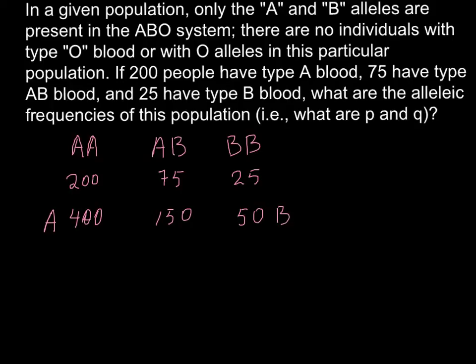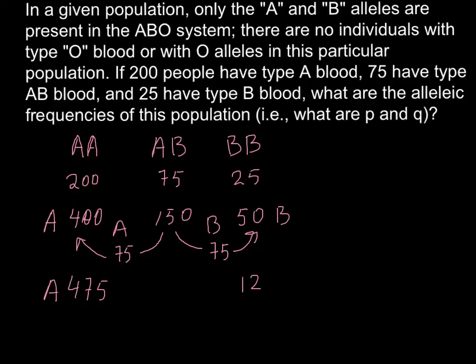Now we have to divide this group in the middle and as you see, this group have 150 alleles, half of them would be A alleles, half of them would be B alleles, so we have to transfer 75 alleles of the type A to this group and here we have to transfer 75 alleles of the type B to the group B. So here we would have total number 475 alleles of the type A and here we would have 125 alleles of the type B.